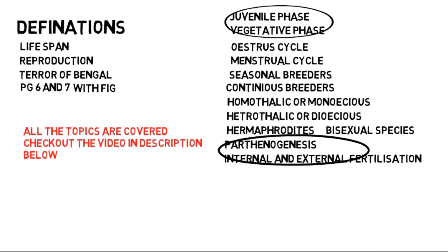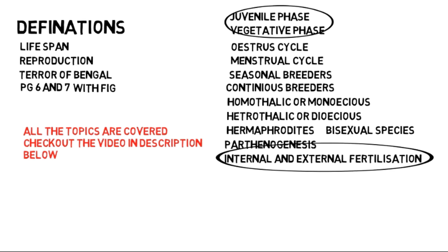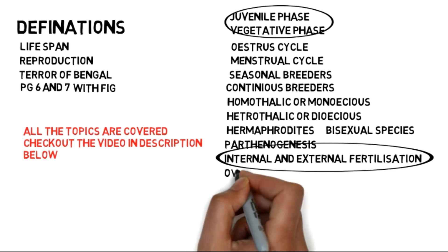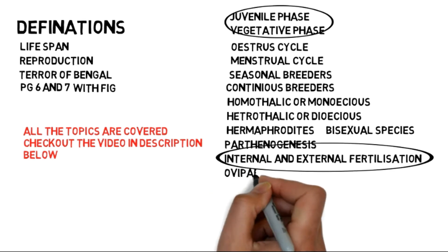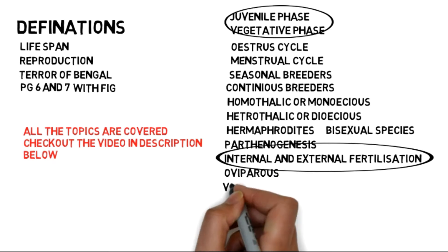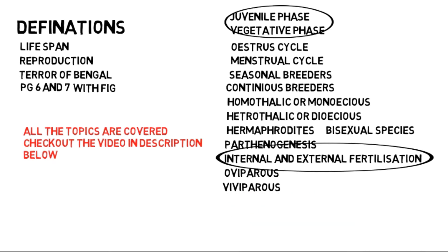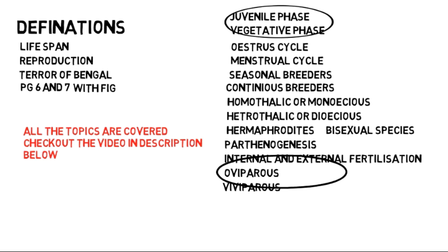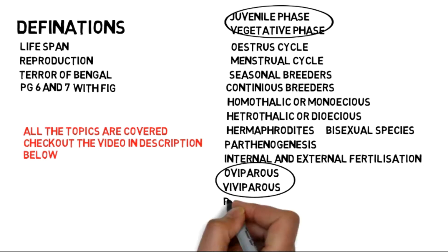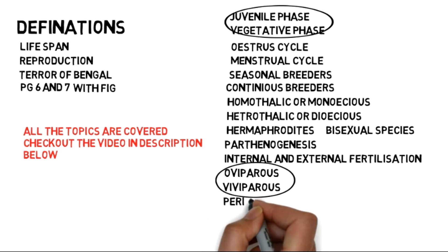Internal fertilization. Oviparous and Viviparous: development of the zygote — if it develops inside the body then it is viviparous, and if it develops outside the body then it is oviparous.